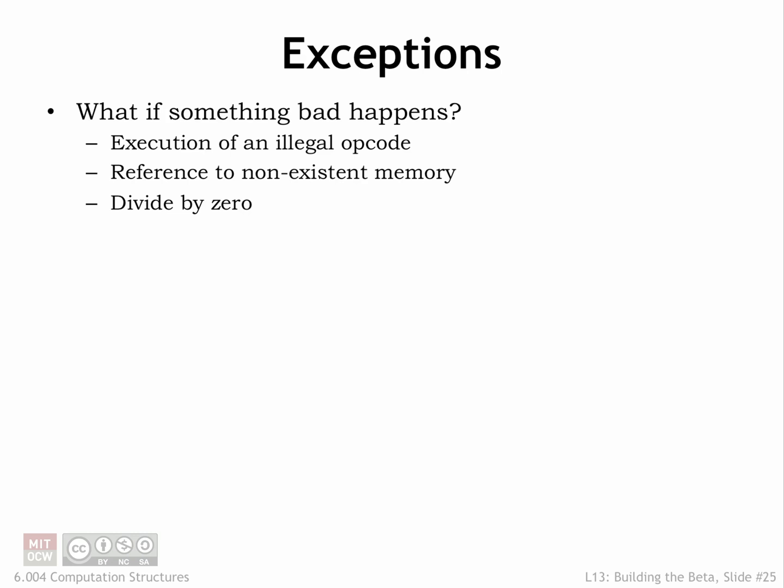One last bit of housekeeping, then we're done. What should our hardware do if for some reason an instruction can't be executed? For example, if a programming error has led to trying to execute some piece of data as an instruction and the opcode field doesn't correspond to a beta instruction — a so-called illop or illegal operation. Or maybe the address is larger than the actual amount of main memory, or maybe one of the operand values is not acceptable, for example if the B operand for a DIV instruction is zero.